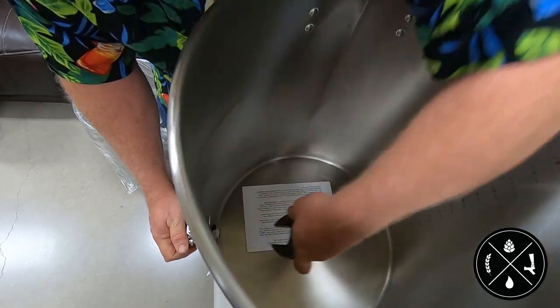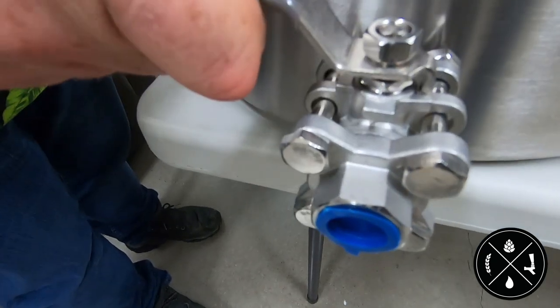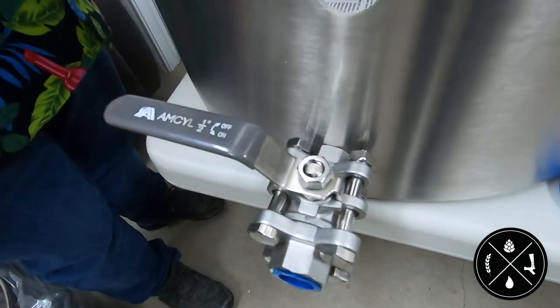And there you have it. This has been how to secure the weldless ball valve on your new AMSL kettle. Hope you enjoy and check us out at homebrewhappyhour.com.